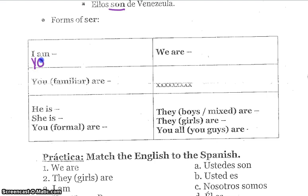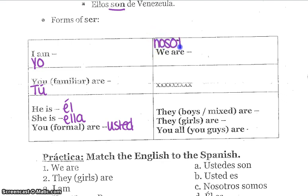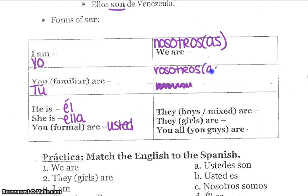Our subject pronouns are: yo for I, tú — you familiar — for you. Then we have él for he, ella for she, and usted for you formal. We is nosotros or nosotras. Go ahead and cross out those X's and write in vosotros or vosotras. They, when we are talking about boys or a mixed group, is always ellos. They, when it is a group of all girls, is ellas. And you all, in everywhere but Spain, is ustedes. That is just a review of our subject pronouns.